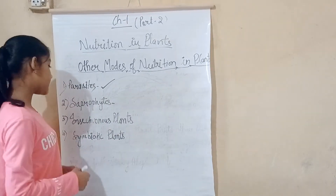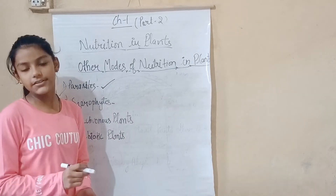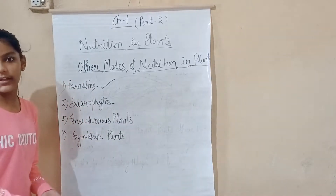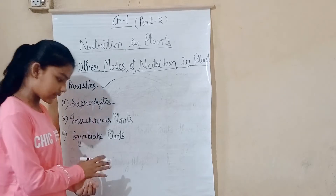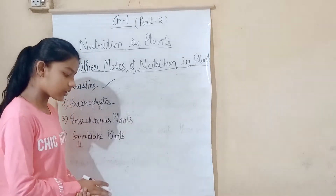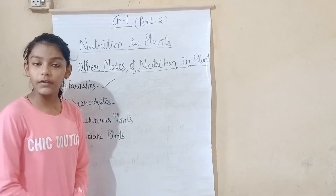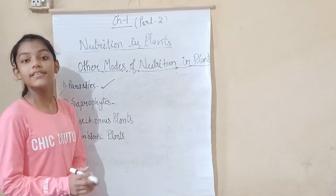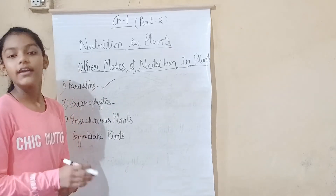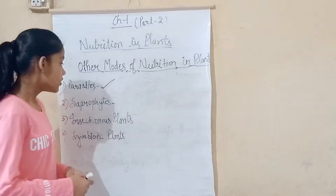The third topic is insectivorous plants. These are called insectivorous plants because they feed on insects. Those green plants that obtain part of their food from insects are called insectivorous plants. Examples include sundew and pitcher plant.